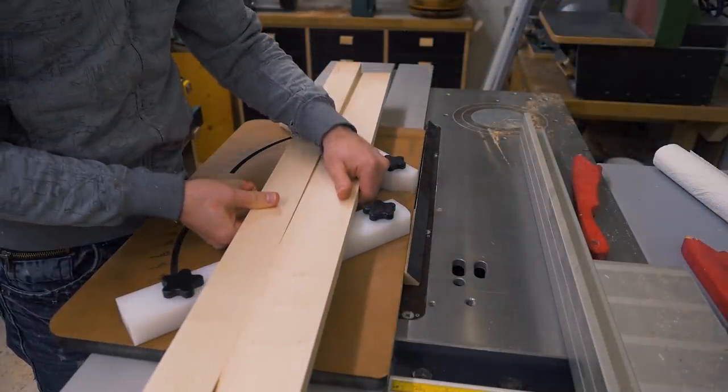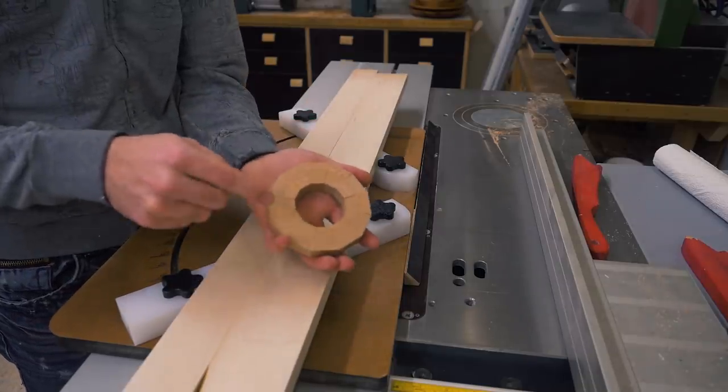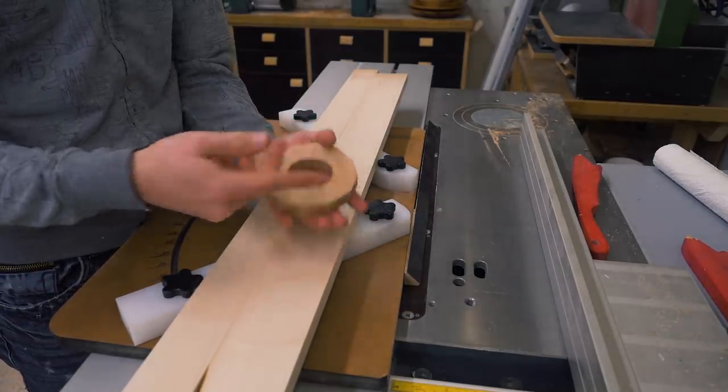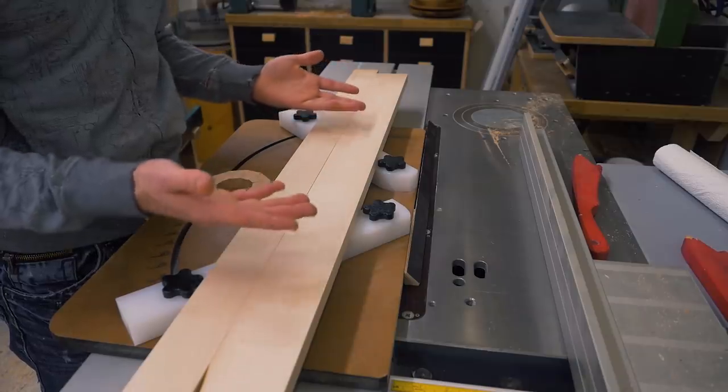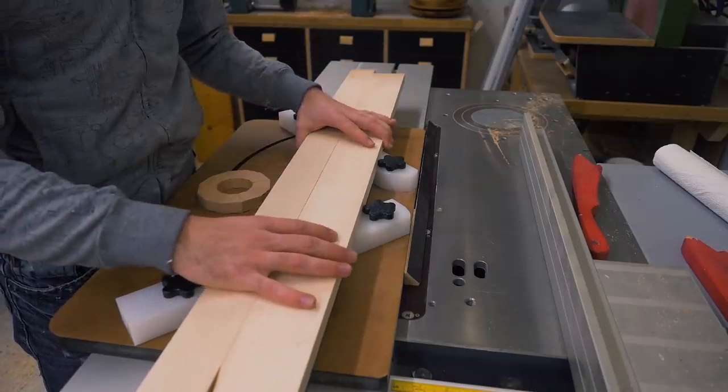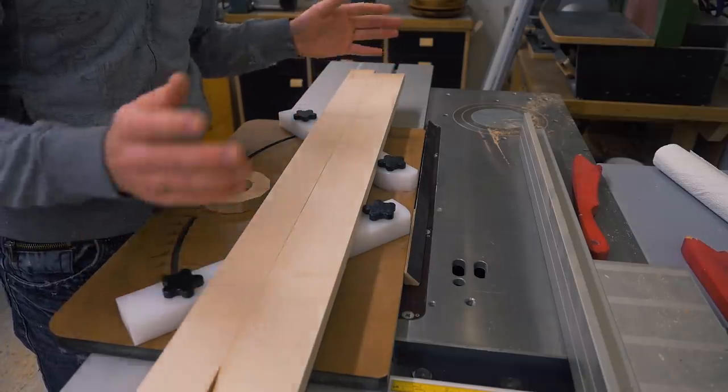To cut the miters I'll be using my wedgie sled which I usually use to make segmented rings like this one, but if I set it up and use it correctly I can also make it cut a ring with four segments which basically is a picture frame.